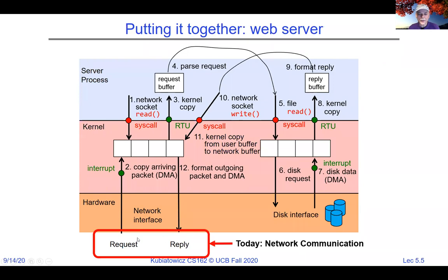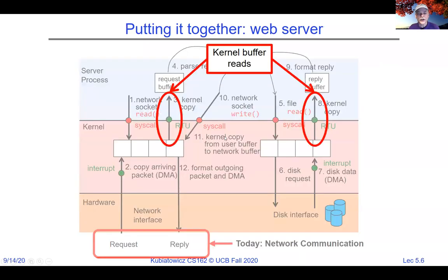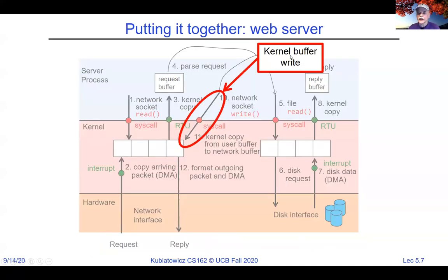Today we'll talk more about this network communication. One thing to note: we were stalled on our reads — both for the network and for the disk — for a while, and the kernel took all the responses and buffered them so we only got returned what we asked for. The boxes inside the kernel are slots for bytes — think of them as a generic queue. When we write our data, it goes into the kernel and is buffered, and we can return immediately to do another read.